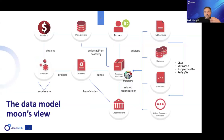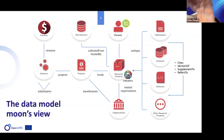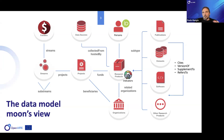This is a view of the data model. At the center we have research products, to which we can attach any sort of indicators — citation count, popularity, influence, usage, downloads, and views — to identify quantitatively and qualitatively the life of a research product. Research products fall into publications, data, and software, which are broadly accepted meta-concepts across disciplines, plus other research products that don't fit those three categories.